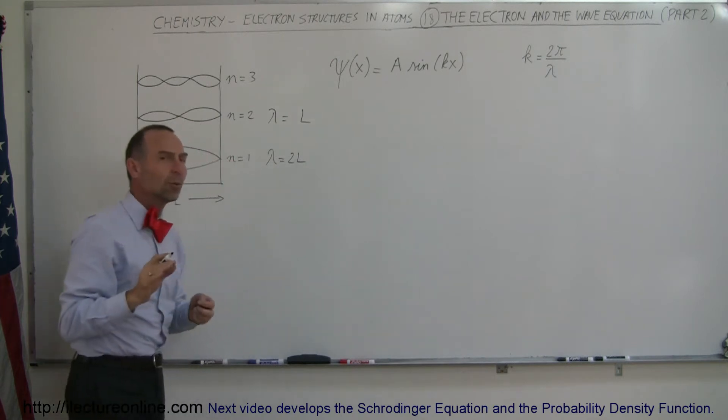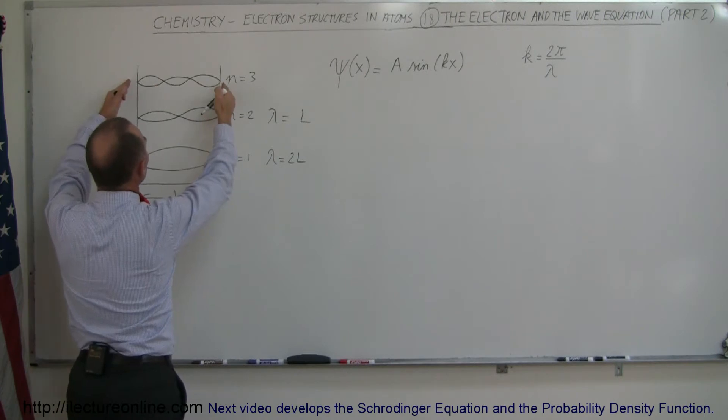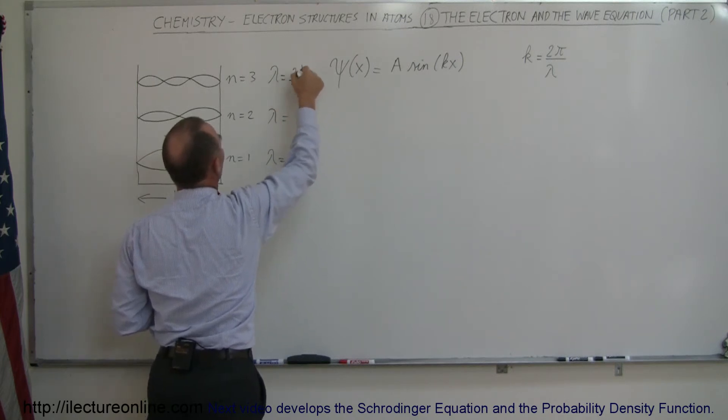Or we'll see in just a moment how we're going to adapt that equation a little bit. And finally, in the third energy level, we can see that the wavelength is equal to 2/3 of the length of the box. So lambda here is equal to 2/3 L.